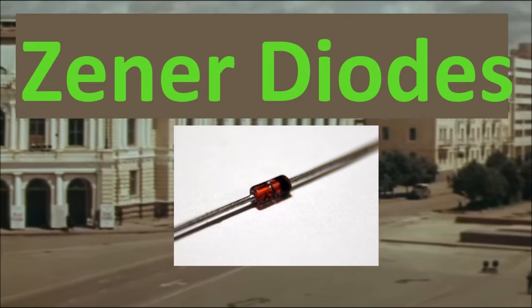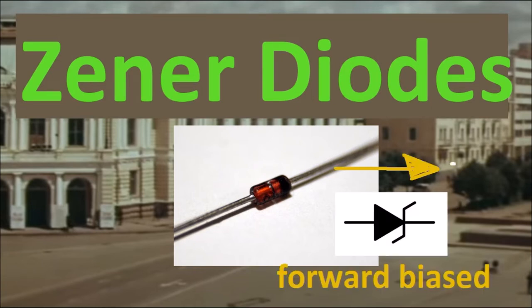Alright, so just to recap. A Zener diode acts like a two-way gate and in forward direction, it might take only about 0.6 volts to get it to open. Very much like a conventional diode.